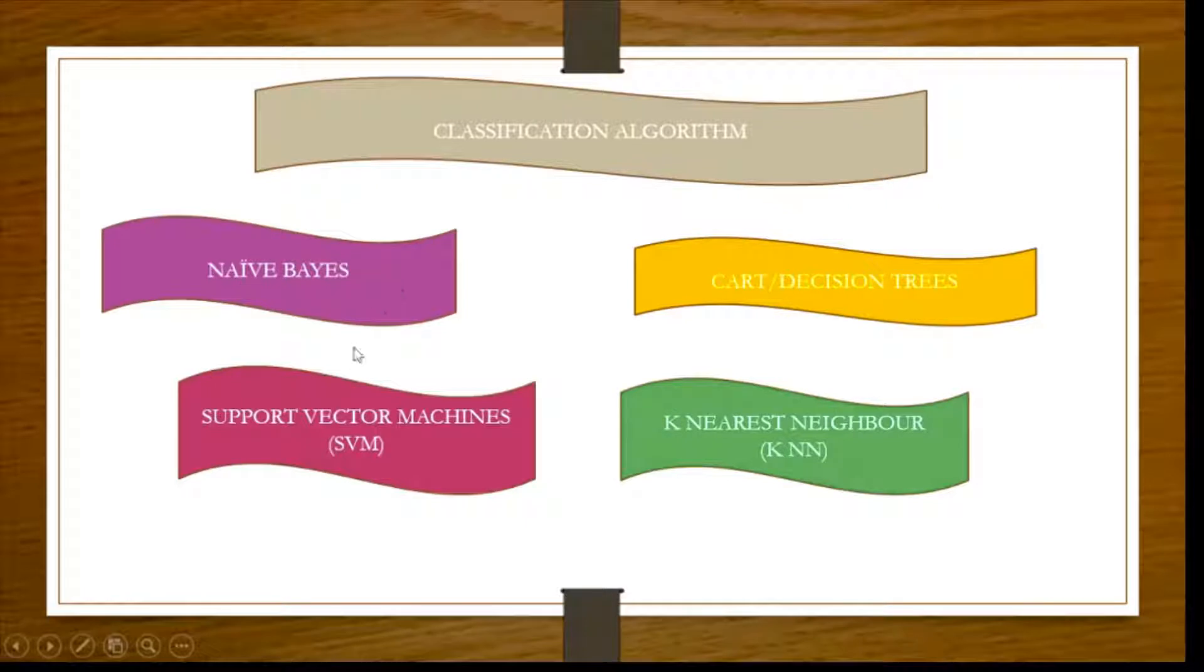They are Naive Bayes, support vector machines, KNN or K-nearest neighbor, and CART or decision tree. This is classification and regression trees.